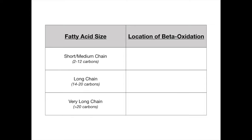Coming back to the chart: in addition to knowing the carbon counts for short, medium, long, and very long chain fatty acids, you need to know where beta-oxidation is occurring — this is another very high-yield topic. Short and medium chain fatty acids diffuse freely into the mitochondria, where beta-oxidation occurs there.